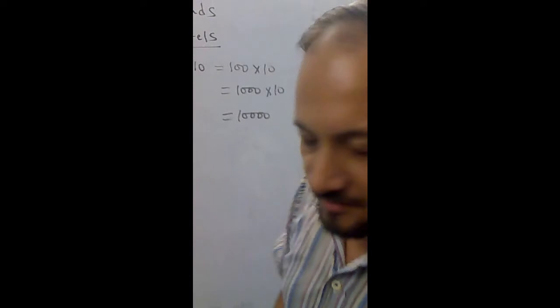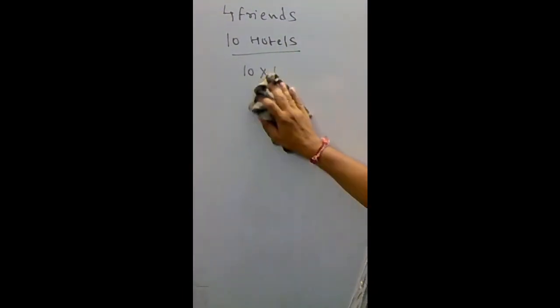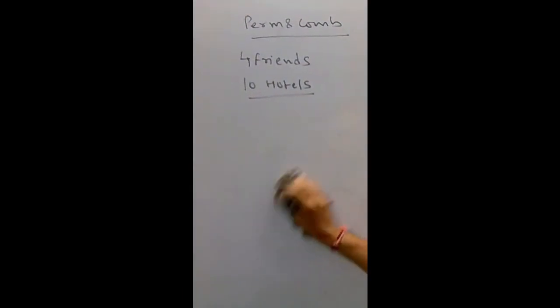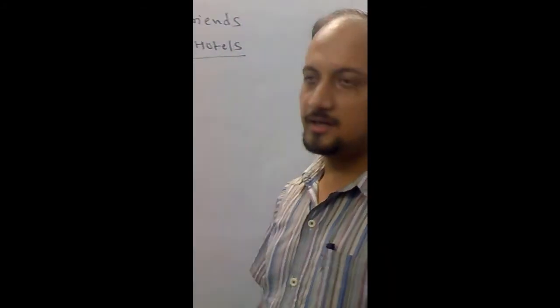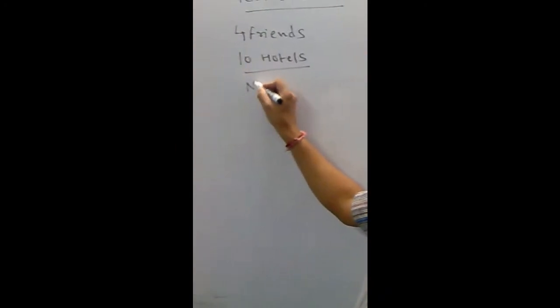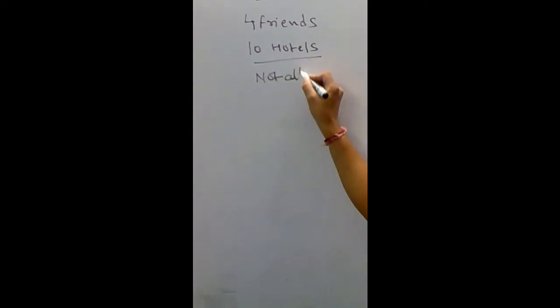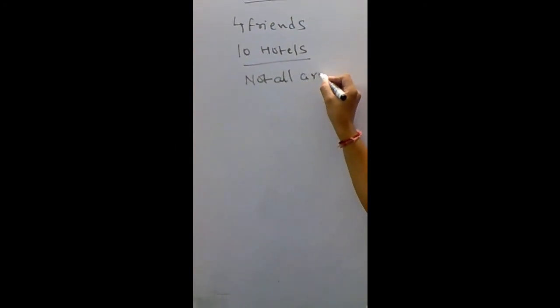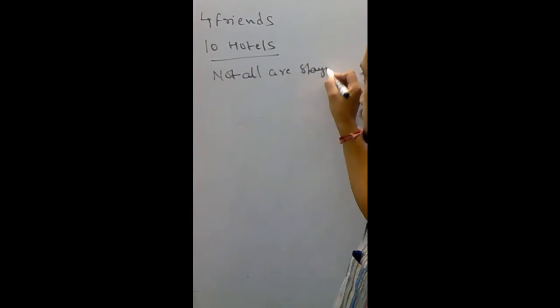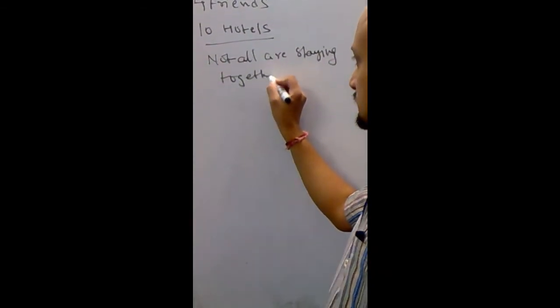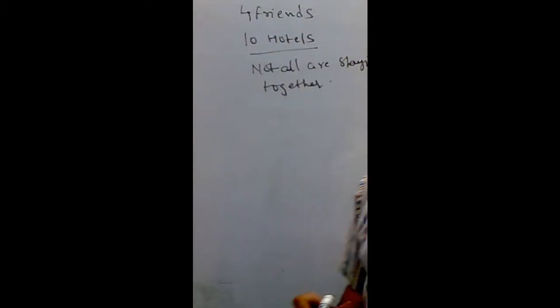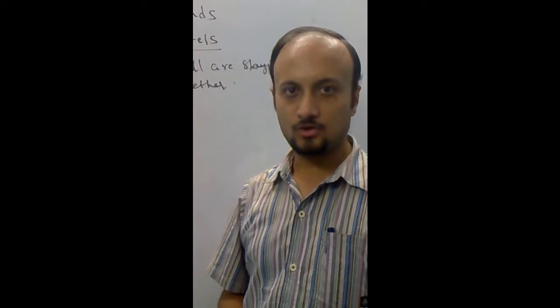Okay. Let us have a variation to this. This is one of the favorite types of questions. Four friends, ten hotels, they want to stay such that not all are staying together. Think over it. Then how many ways? Remember one thing. Whenever the question says, not all are staying together, what will you do?